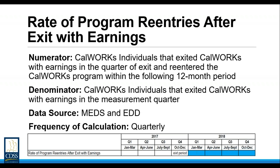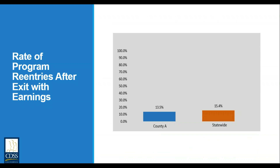Here you see the calculated rate for County A and the statewide calculation. The blue bar on the left shows that for County A, 13.5% of welfare-to-work individuals that exited CalWORKs and had earnings between October and December 2017 later returned to CalWORKs within 12 months. This is less than the statewide rate of 15.4%.